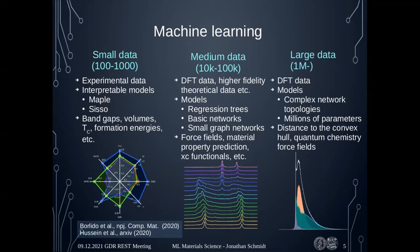Lastly, in the big data regime — millions or hundreds of thousands of data points — we only have DFT data, but we can use really complex network topologies with millions of parameters. Even though we can't do this for a lot of problems, this might be the most interesting regime, since nearly all the revolutionary applications I mentioned lie in this large data regime. Some applications here include quantum chemistry force fields, for example the ANI force fields. This is what I'm going to talk about today: predicting thermodynamic stability, or distances to the convex hull.